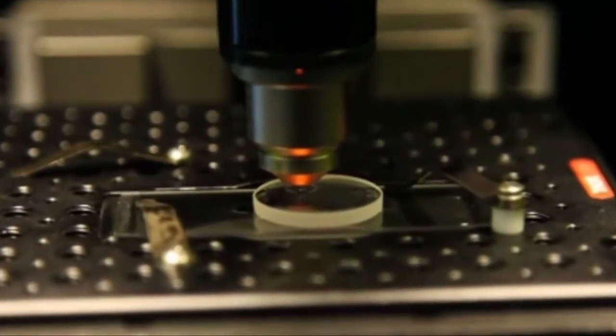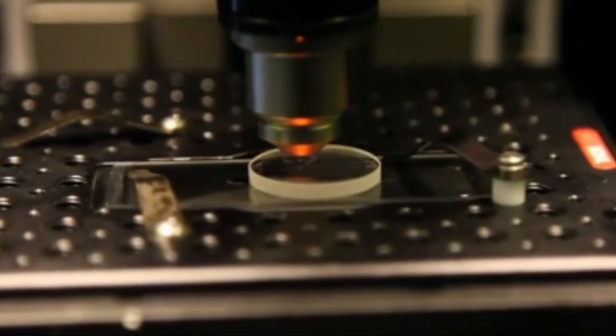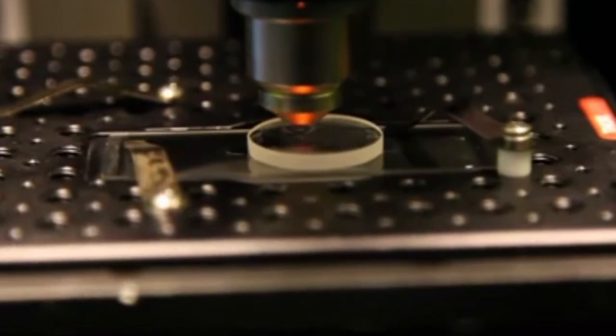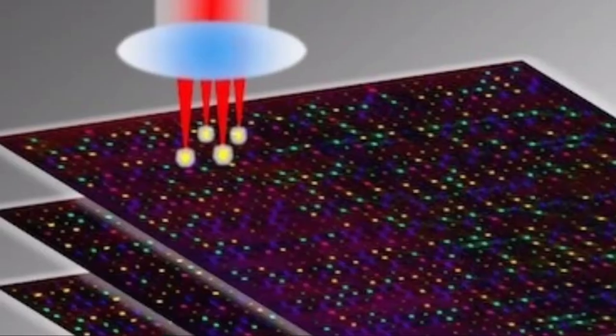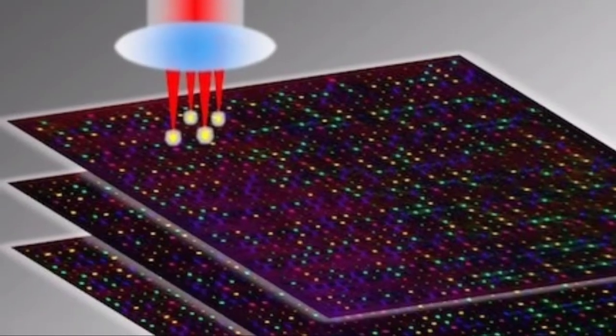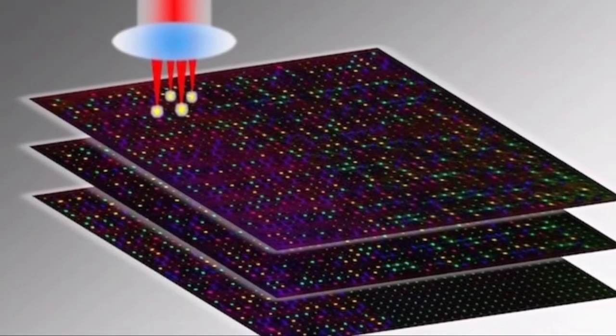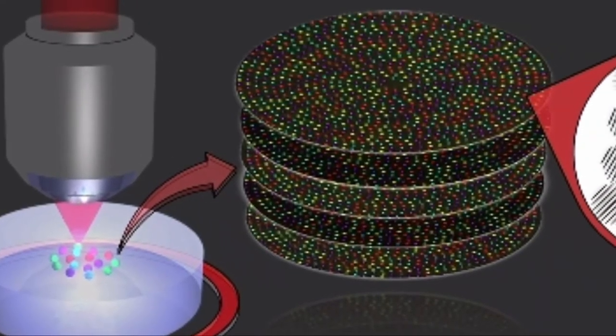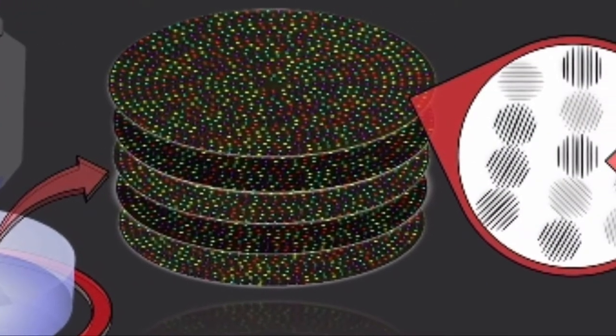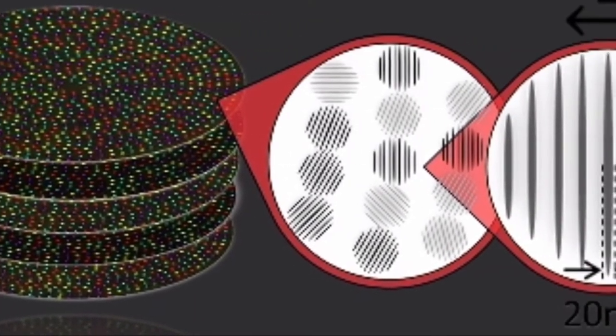Documents are recorded using an ultrafast laser, which produces very short and intense pulses of light. The file is then written in three layers of nano-structured dots separated by 5 micrometers. The 5D storage is made up of the three dimensions of space responsible for describing the physical location of the dot, and two additional dimensions encoded by the polarity and intensity of the beam that makes the dot.